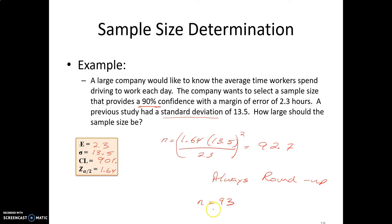So our sample size needed is 93. Given a sample size of 93, we go out and talk to 93 workers, ask them what their driving time is, and then we can develop a confidence interval. That confidence interval will give us a margin of error of plus or minus 2.3 hours.